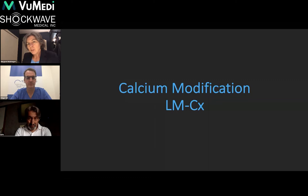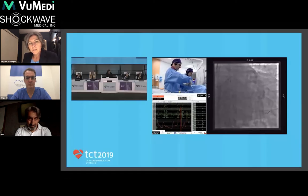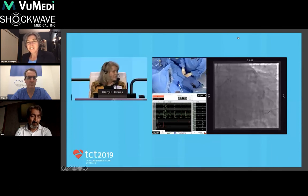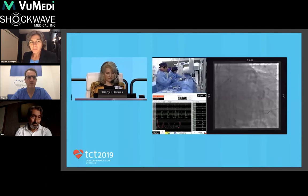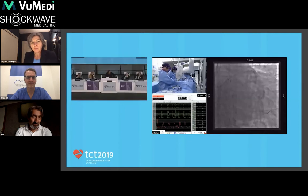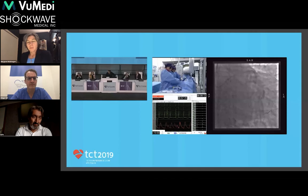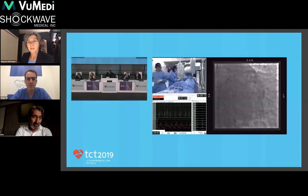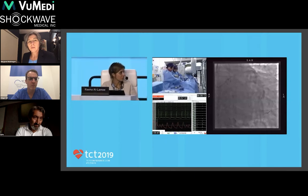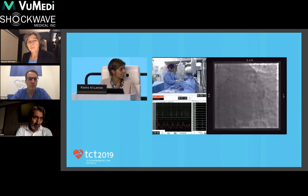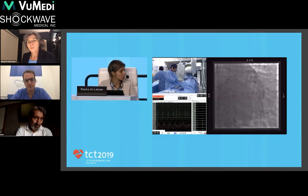The circumflex is now treated with a second Shockwave balloon. The operator switches to the circumflex and highlights that having a wire in the side branch makes Shockwave feel much nicer than rotablating across a very large circumflex in the absence of a right coronary artery. This makes the technique more controlled and safer. A 3.0mm balloon is selected for the circumflex, sized 1:1 to the distal vessel.